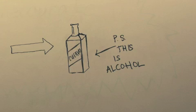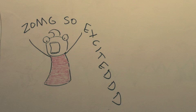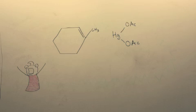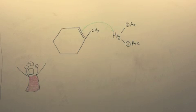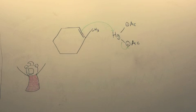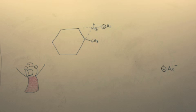Definitely need some alcohol here. The double bond attacks the mercury atom on the mercuric acetate. A temporary attraction forms between the mercury atom and the two carbon atoms on each side of the double bond.